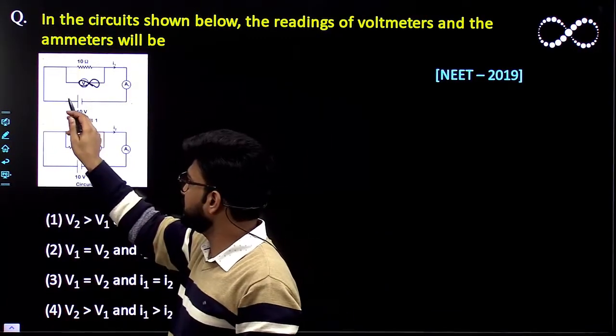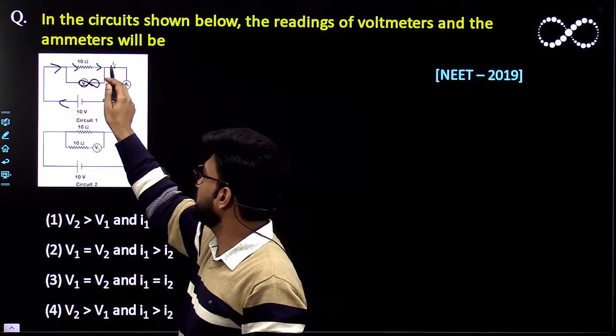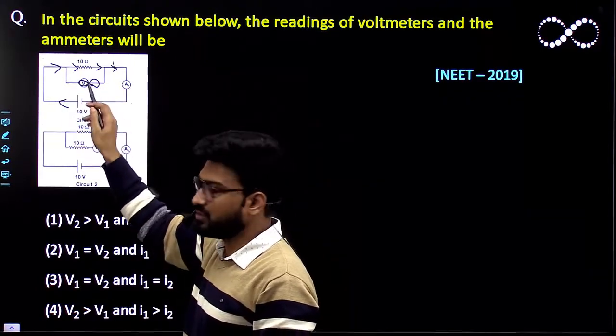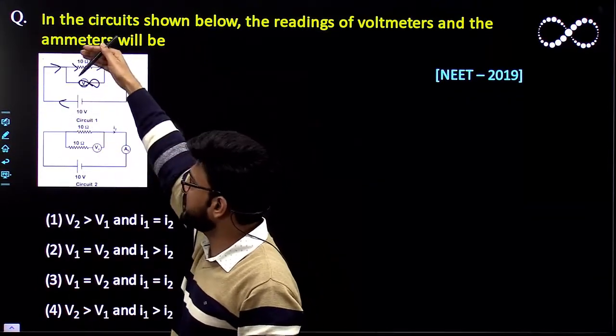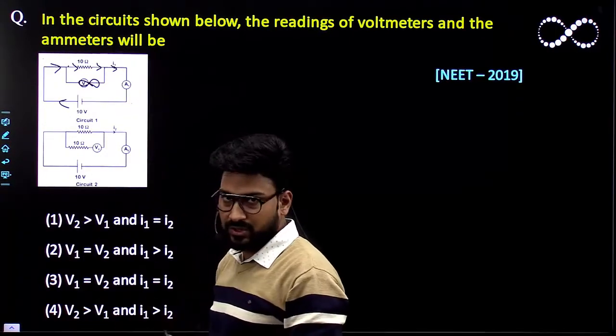So that means whatever current is coming it will go through this circuit. It won't go through the voltmeter and voltmeter will keep reading the potential difference across these two terminals.